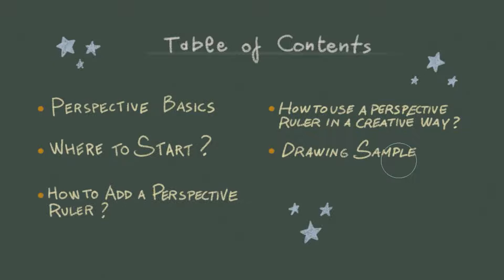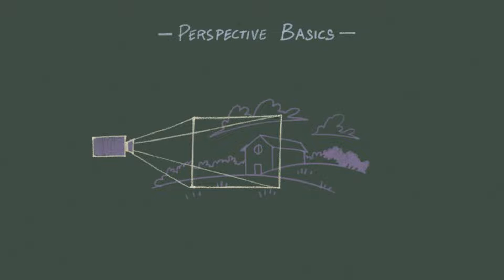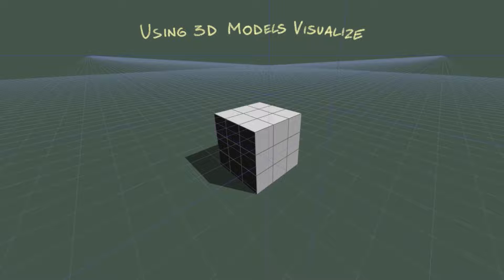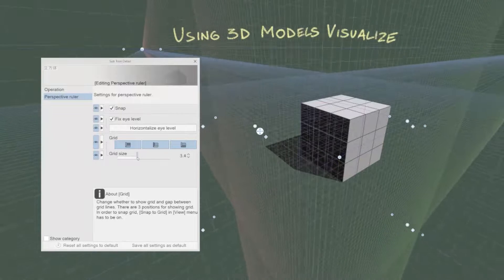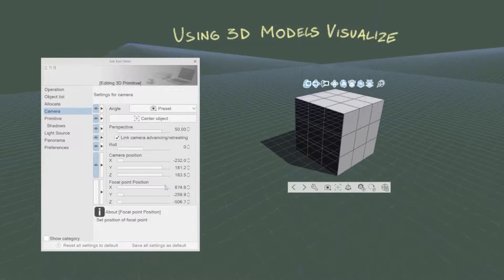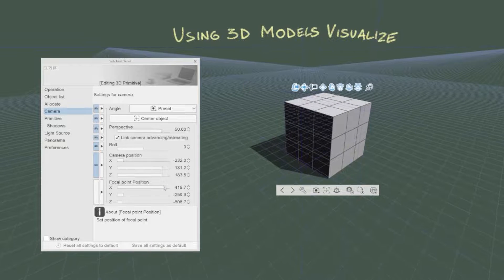We're going to see what the perspective basics are, where to start, how to add a perspective ruler, how to use a perspective ruler in a creative way, and a drawing sample. When it comes to perspective, I like to think that the canvas is like a camera viewfinder. The first thing to do is set an eye level. Then, with a straight line, I create the horizon line and then I add one or two points depending on what type of perspective I need. Perspective can have many more vanishing points, but for this example I will only use two. An easy way to visualize a perspective grid in Clip Studio Paint is also loading a 3D model in the project and activating the perspective grid. In this way, it's also possible to learn by changing the perspective number in the subtool detail panel of the 3D object and have a real-time visualization of how changing the vanishing points affects the object depicted.